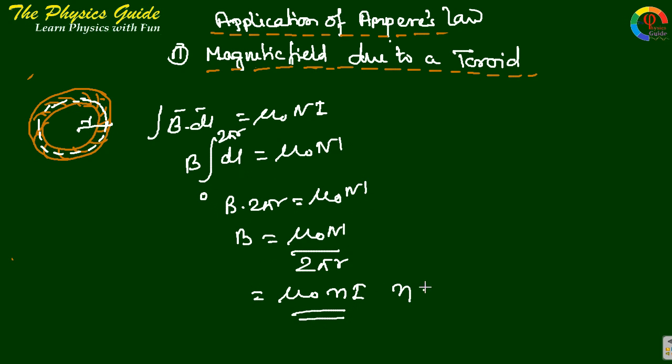Where n = N/(2πR), the number of turns per unit length. For the outside case, let P be at this point.